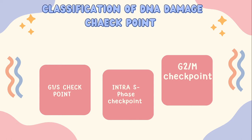Then when the cell goes from G2 to M phase, there is the G2/M Checkpoint. This checkpoint ensures that DNA is not damaged before entering M phase. If damage is detected, it can lead to apoptosis. This is a very important pathway.